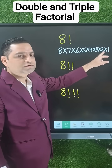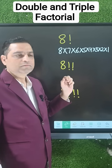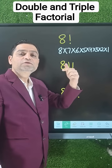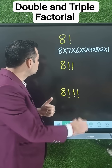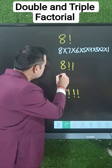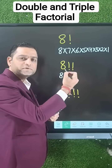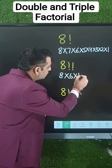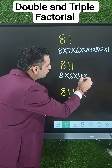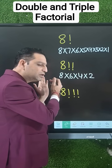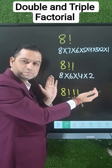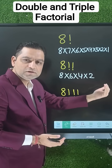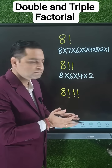When double factorial is there, we need to subtract 2 from the original number. For example, 8, then subtract 2: multiply by 6, multiply by 4, multiply by 2. We keep on decreasing by 2 and end at 2, because after 2 it would be 0, which we do not write.